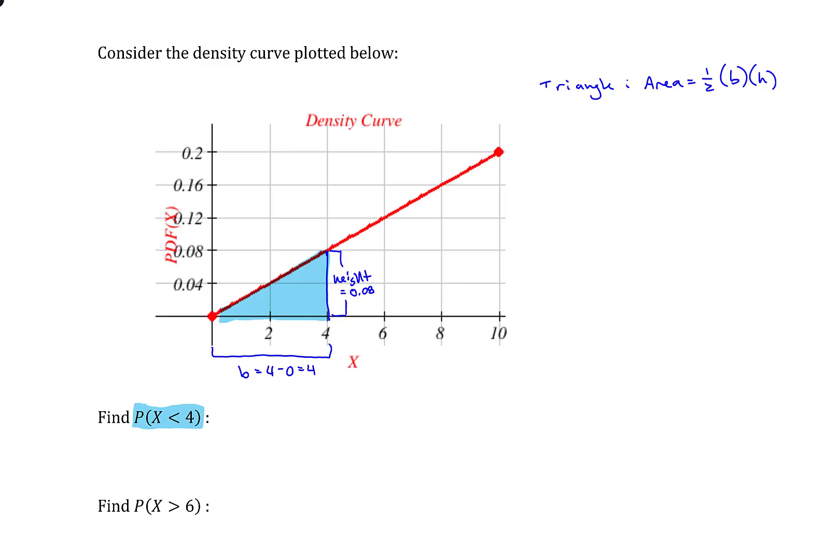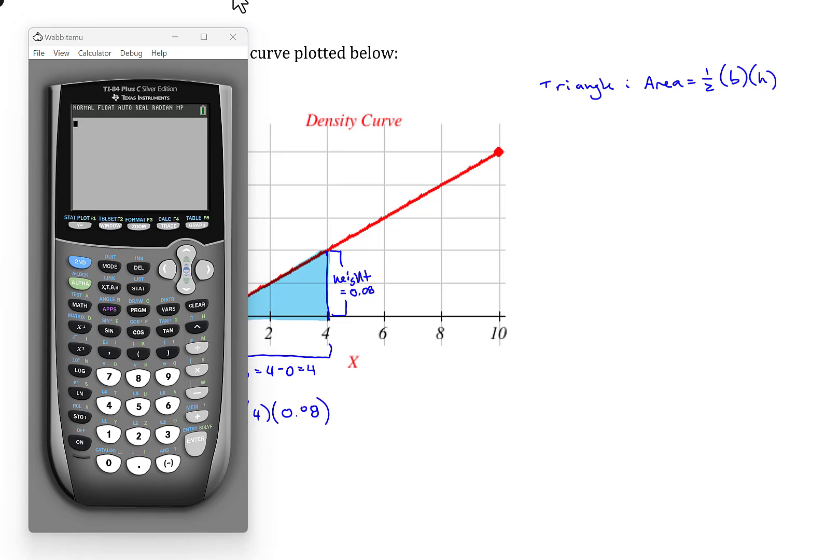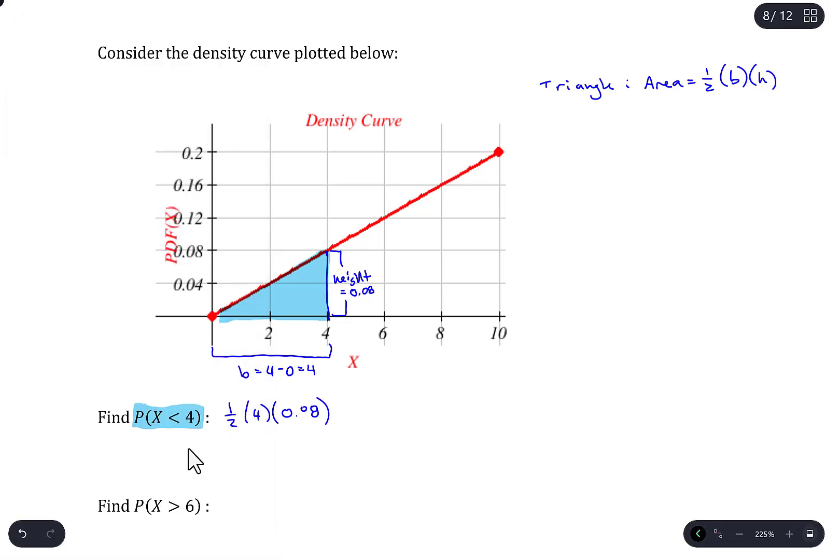So the probability is the area, which is going to be one half of the base times the height. And in order to solve that, I will just grab a calculator. So 0.5 times 4 times 0.08. That gives me 0.16. That's the total area of that triangle, and therefore the probability for that region.